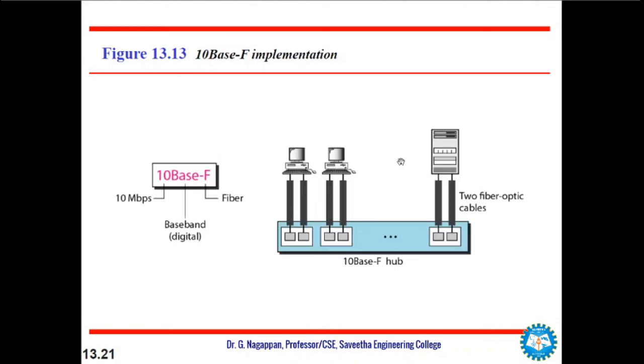Next is 10BaseF, called fiber Ethernet. Although there are several types of optical fiber, for 10 Mbps Ethernet the most common is called 10BaseF, where star topology is used to connect the stations to the hub. The stations are connected to the hub using two fiber optic cables as shown in the figure.